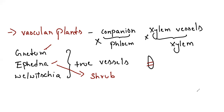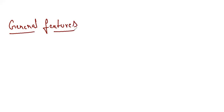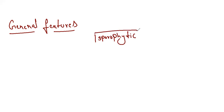Now let's go with the general features of gymnosperms. The dominant plant body of gymnosperms is sporophytic, which is 2N — diploid. The gametophyte is always haploid and the sporophyte is diploid. The plant body is differentiated into root, stem, and leaves. Gymnosperms have a taproot system, similar to angiosperm dicotyledons.